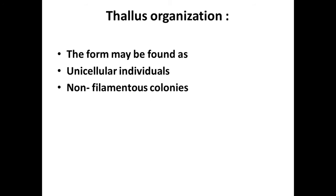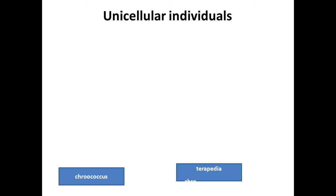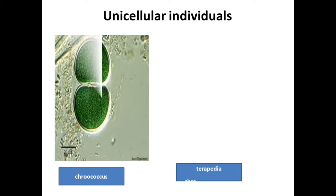Let us discuss one by one. First one is unicellular individuals, like Chroococcus and Gloeothece. These are examples of unicellular forms in blue-green algae.